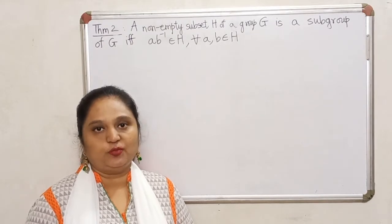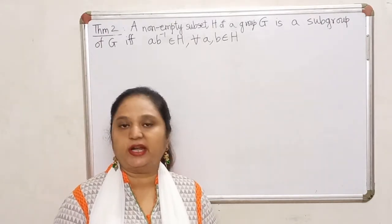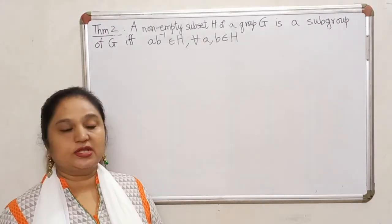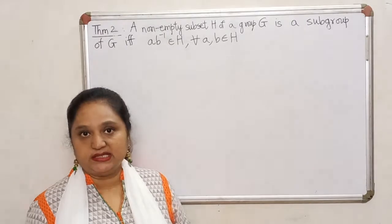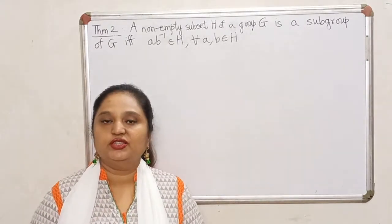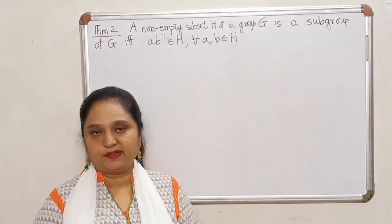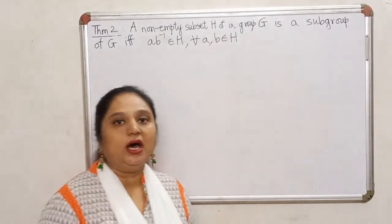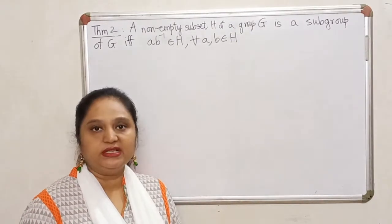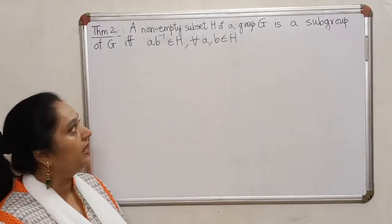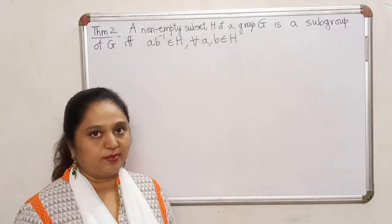Naturally the question arises: which is the better property to use — the necessary and sufficient condition in Theorem 1 or Theorem 2? Since Theorem 2 involves checking only two conditions, go ahead and use Theorem 2 as a first option. But sometimes you may come across a dead end with Theorem 2. In some examples, using Theorem 2 is a little more difficult to verify that something is a subgroup, and in that case you can always try Theorem 1.